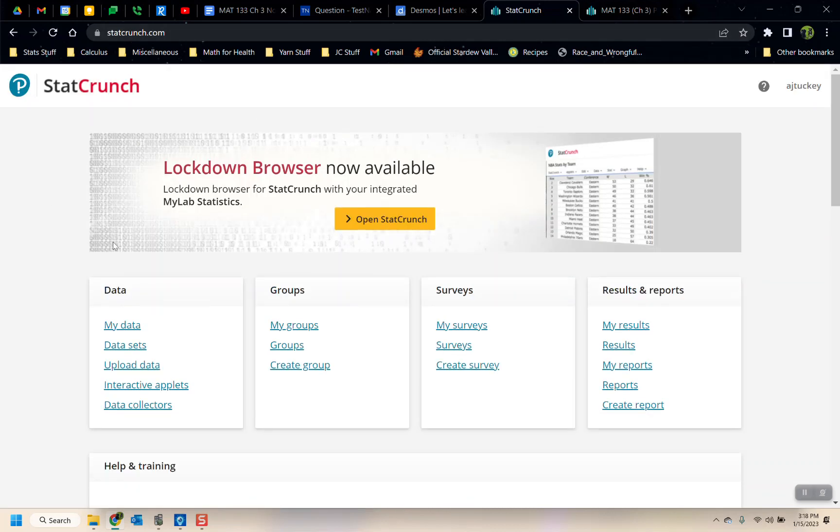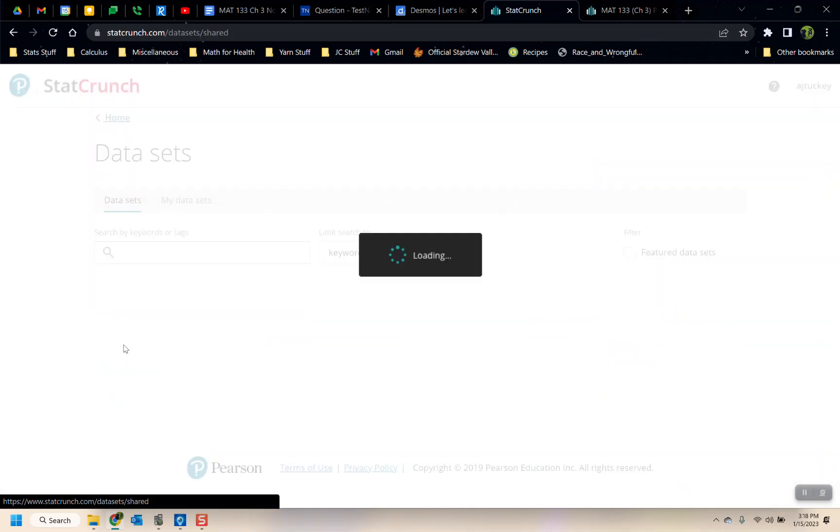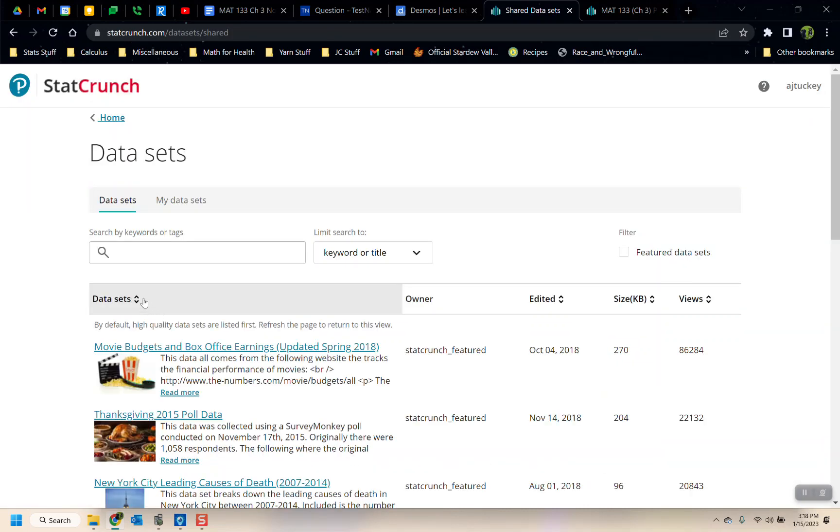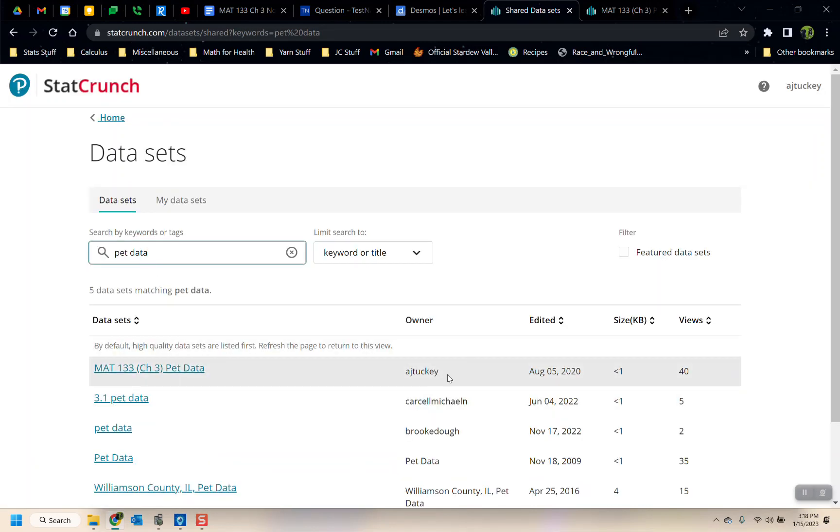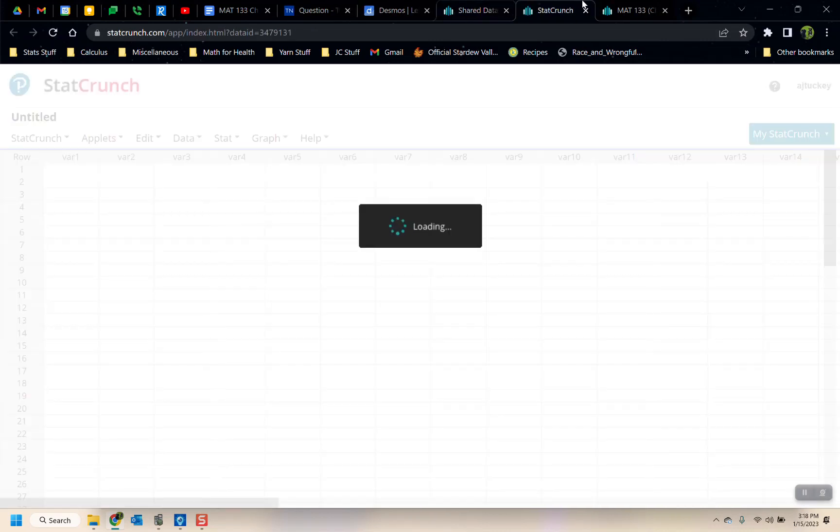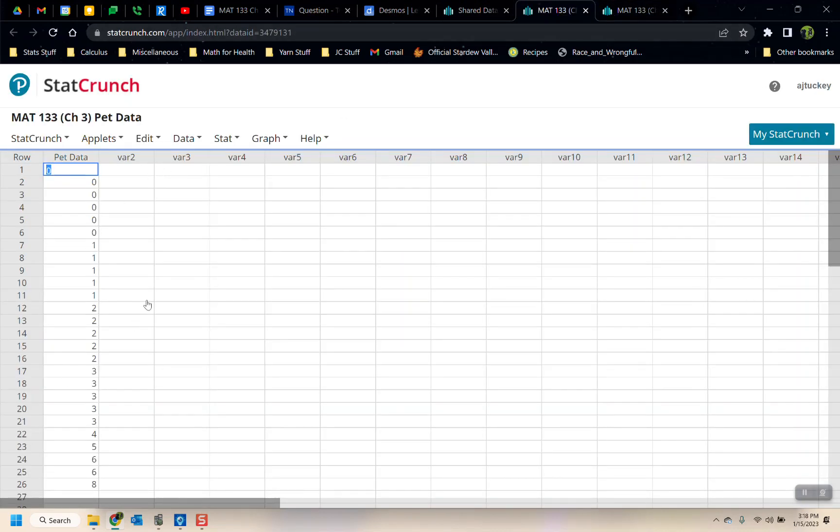So in StatCrunch, down here where it says Datasets, there are publicly available Datasets. Now, I've made this Dataset available. So if you click on Datasets and you type pet data, there it is. It's AJ Tucky. That's me. There you go. You can click on that one. And there it is. There's the Dataset. It's in order.